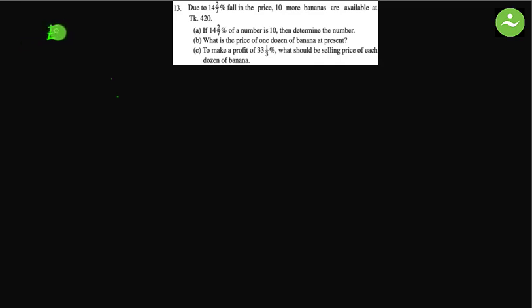Assalamualaikum, greetings from Talent Upskim Class 6 English version, math exercise 2.2. Question number 13: due to a 14 and 2/7 percent fall in price, 10 more bananas are available at taka 420. Question 13 has three different parts — a, b, and c — so we will answer one after another.